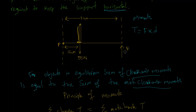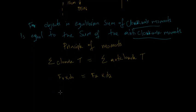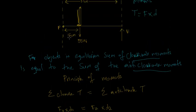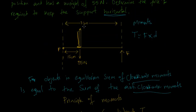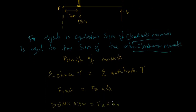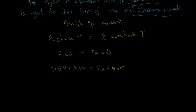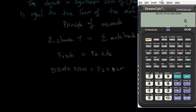The moment due to the force F is our anti-clockwise moment. The force of the television is 55 Newtons, acting at a distance of 15 centimeters. Since our force is in Newtons, our distance must be in meters, so we convert 15 centimeters by dividing by 100 to get 0.15 meters. That is equal to F2 multiplied by the distance of 0.6 meters.